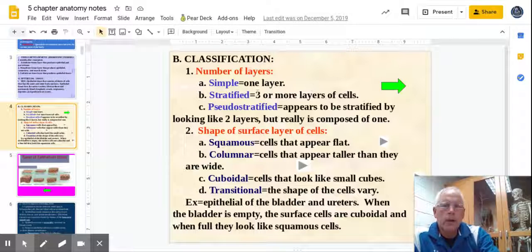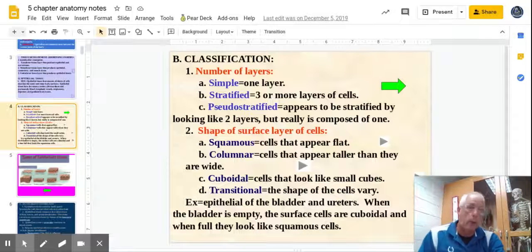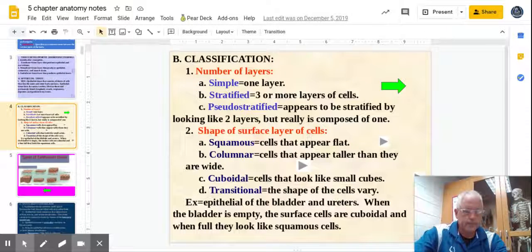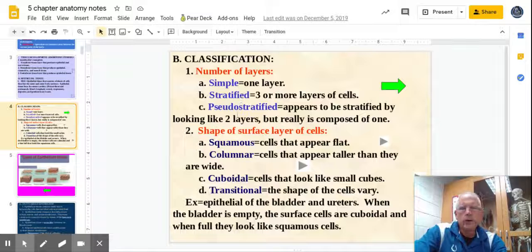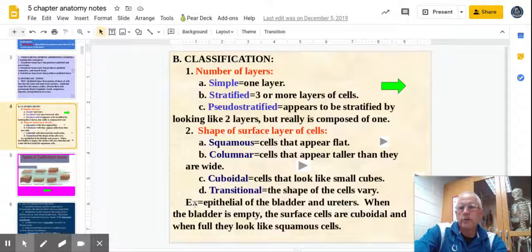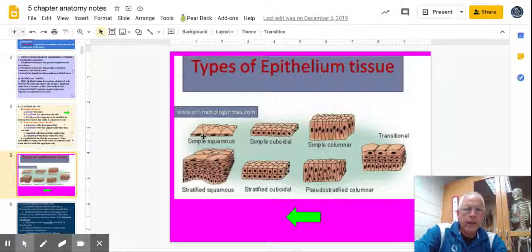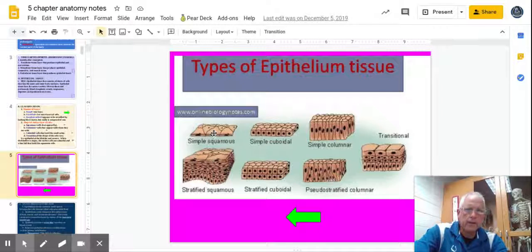So the first part is pretty simple: number of layers. Do I have one layer? Do I have multiple layers? For whatever reason, epithelial does not come in groups of layers of two. I don't know why. It's either one or multiple. So simple is one layer. You got just one layer of cells. Stratified is three or more. We skipped two. So you can see stratified, it's got lots of layers and then simple has one.